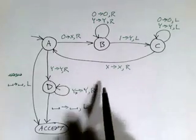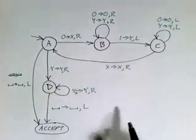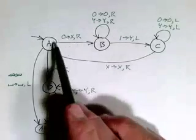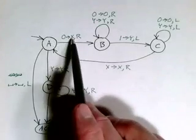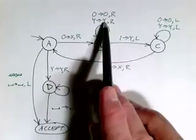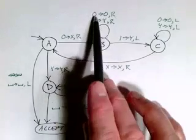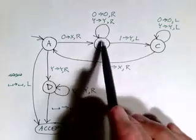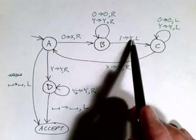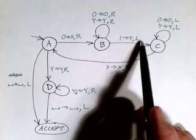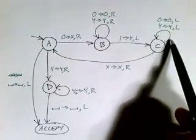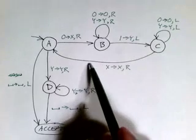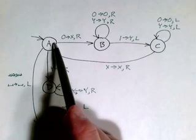Here is a Turing machine that I claim will perform that computation the way we've just described it. We have our initial state. We have an accept state. Here we scan our first zero and turn it into an X and move to the right. Here in this cycle we skip past zeros without modifying them. And we skip past Y's without modifying them. Always moving to the right until we hit a 1 in which case we turn it into a Y and then move back to the left. Here we scan past the Y's and then past the zeros, moving to the left, until we hit an X. We don't modify the X, but we move to the right and we repeat.